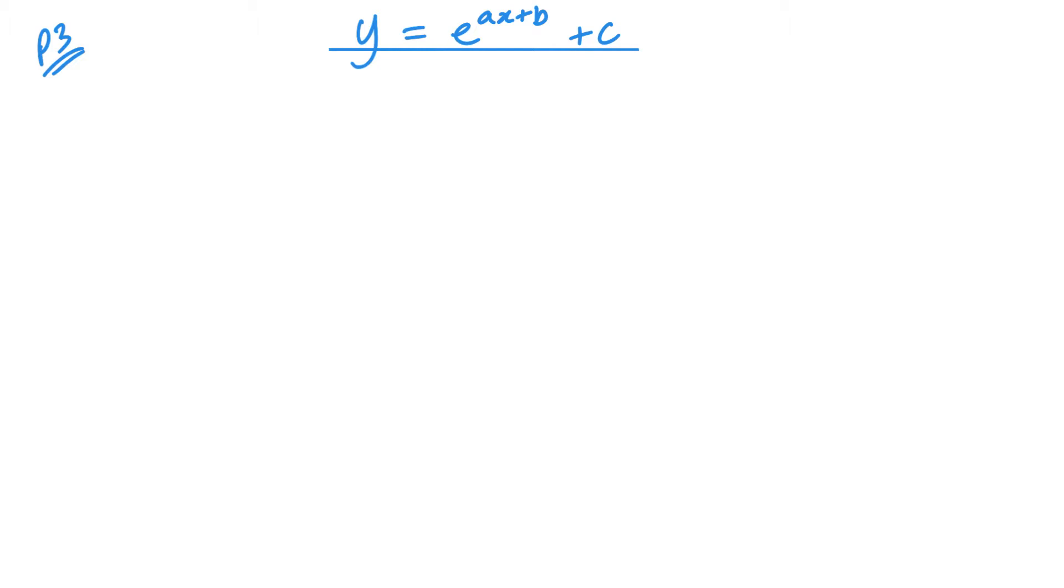Essentially we're looking at differentiating functions which are e to the power x or a function of x. e is quite an important number in mathematics. It's a special number. It's a number where the gradient function is exactly the same as the original function. Now what that means for you and I is that when we differentiate e to the power x we get e to the power x. We get the same thing and that has a lot of uses.